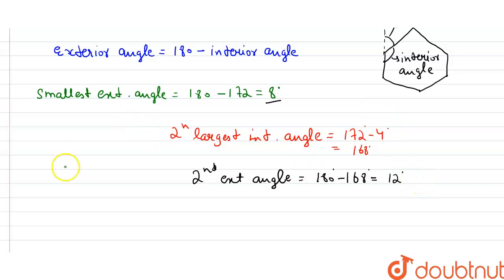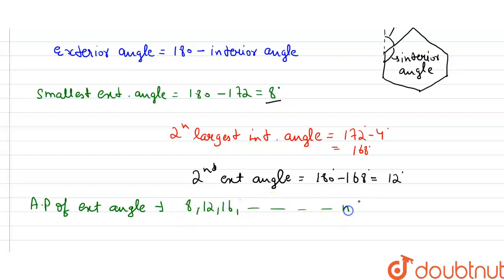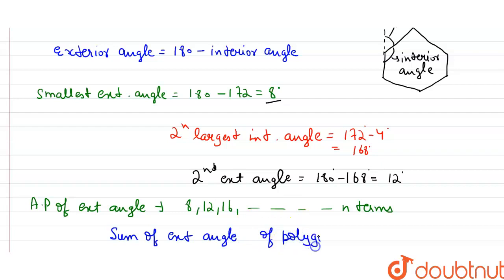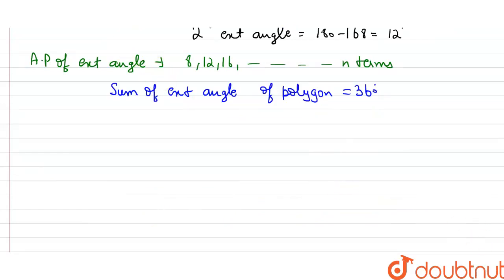So our AP of exterior angles has first term 8, second term 12, then 16, and so on, up to n terms because we have an n-sided polygon. We know that the sum of exterior angles of a polygon is equal to 360 degrees.